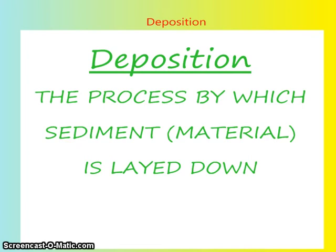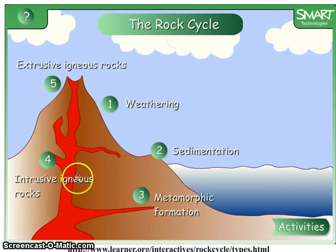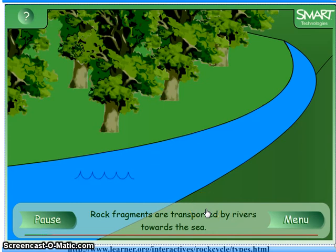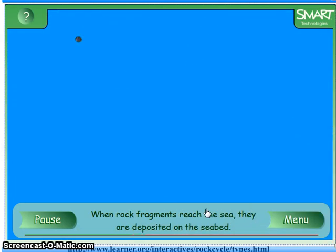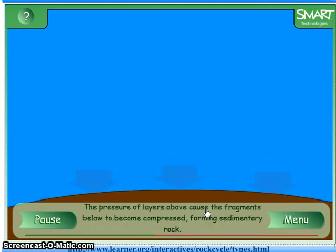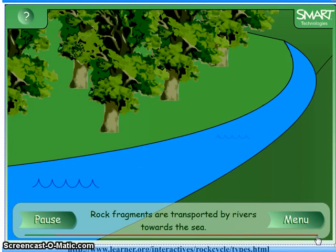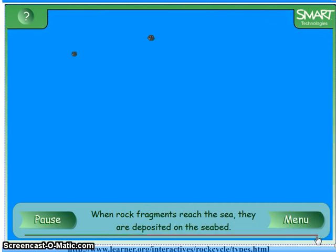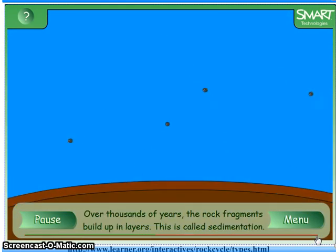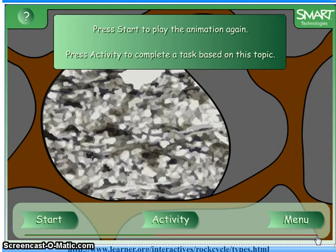Deposition is the point at which sediment or material is actually laid down. Make sure you write the definition for deposition on your note-taking sheet. Here we can see a river transporting fragments of rock — that is erosion. The moment those pieces of rock stop moving and settle and build up layers, this is called deposition. Over thousands of years, rock fragments build up into layers and become sedimentary rock as they are compressed together over time.